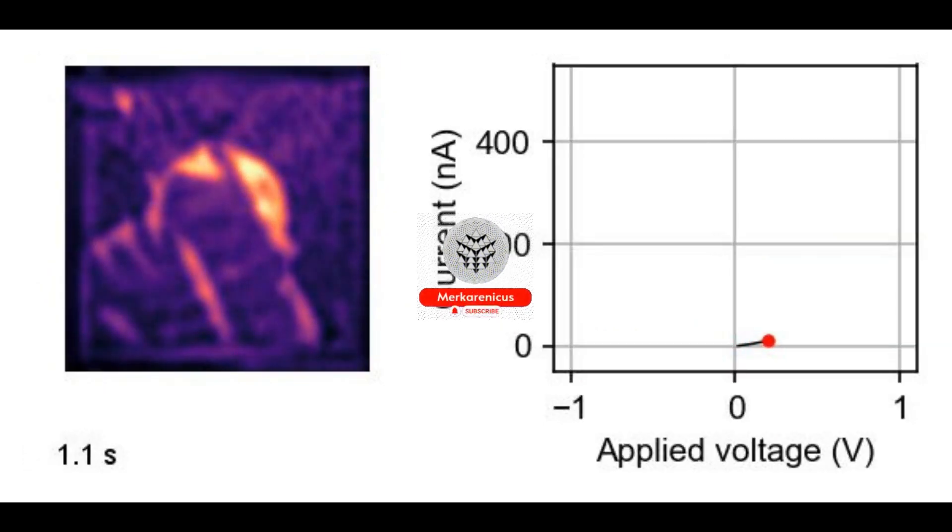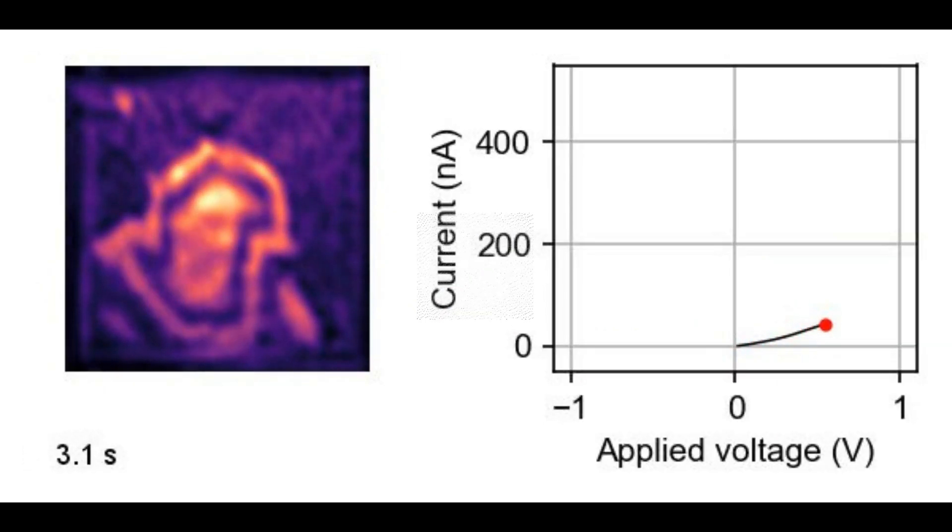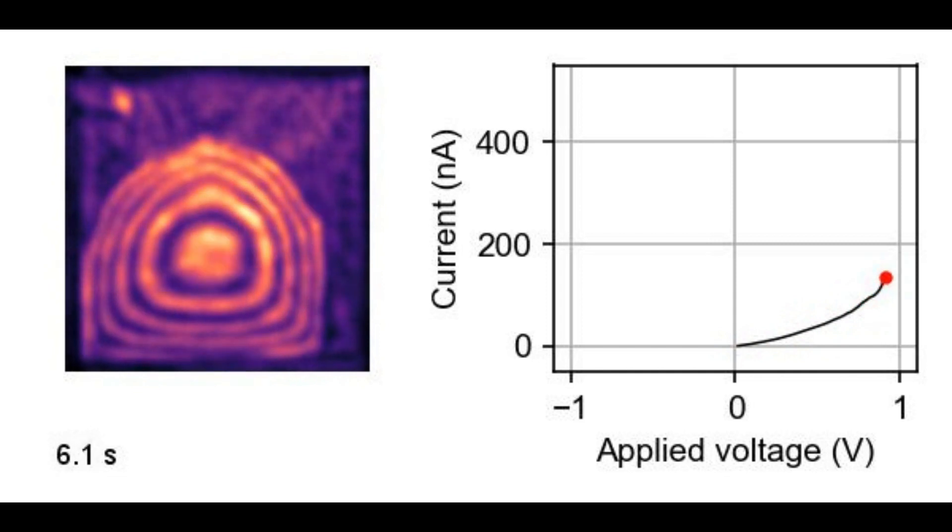These devices, known as highly asymmetric channels, HACs, are named after the shape of the ion flow towards the central pores.